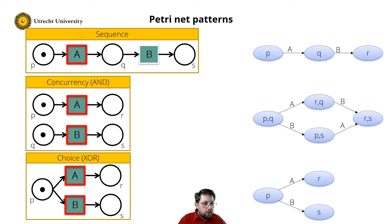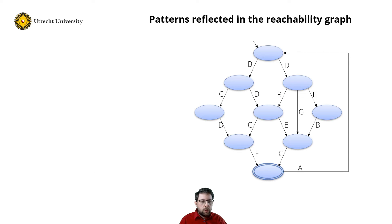So when we have a labelled transition system, we can search for these patterns to discover a Petri net that generated this labelled transition system. Let us consider an example. See the transition system on my right. Can we find a Petri net that has the same reachability graph as this labelled transition system?